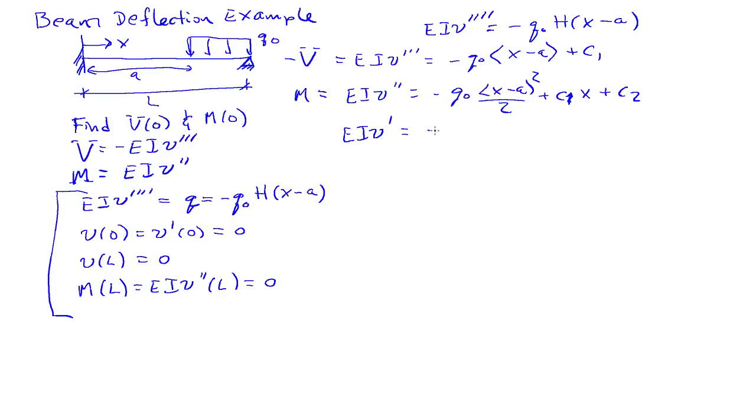And I'm going to have minus Macaulay bracket cubed over 6, C1 X squared over 2, plus C2 X plus C3. And I can integrate one more time to get the deflection.